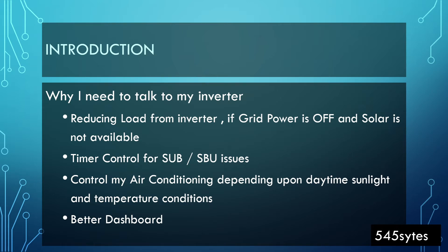The problems I was facing were: I couldn't control how my inverter supplies power to different areas of the house. When there's no grid power, I want to supply solar power to specific rooms, not the whole house. I was also facing issues with the timer on the VM3 — at midnight my inverter automatically tried to convert to the SBU solar setting, which was very annoying because I'd start hearing beeps in the middle of the night.